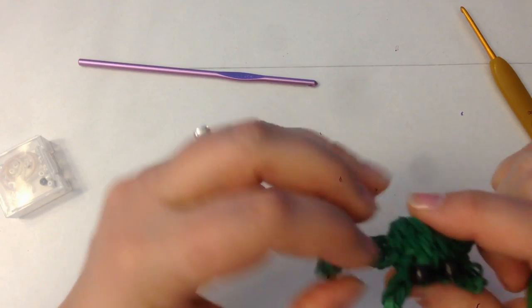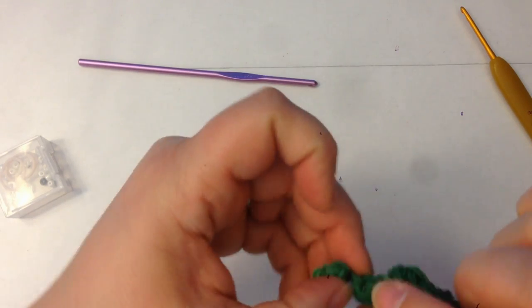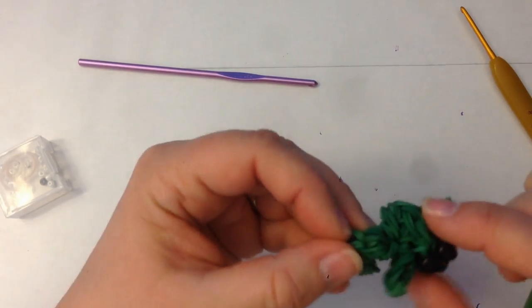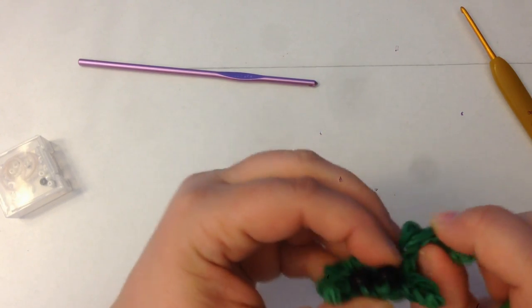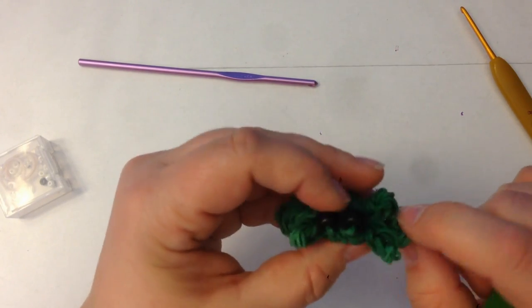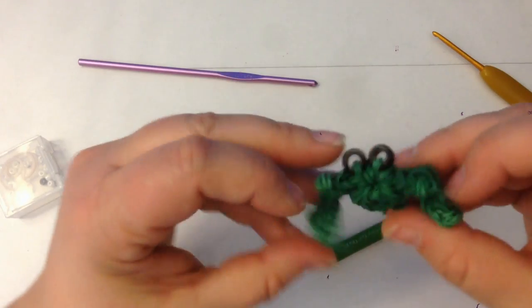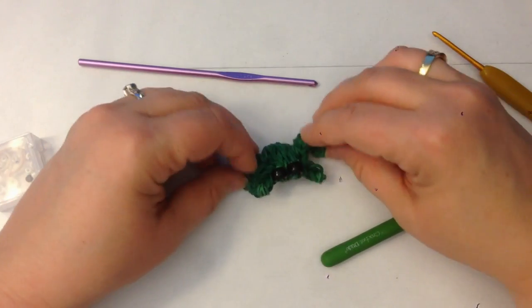So these are his little arms. And these are his legs. Now, if you pull his legs out, you've got these little joints here on his legs. So you can make him stand up. Like that.